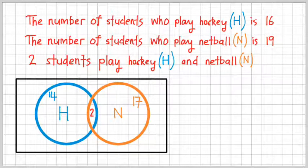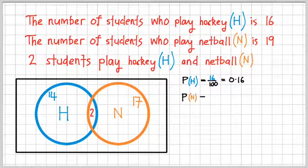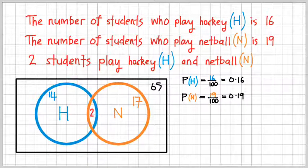So here we go. There's our diagram again. And let me speed this up a little bit. There we go. This is what we had before. And I'm just going to label that 65 as well. Now, these probabilities will stay the same because the event of H or students playing hockey, there is still going to be 16 regardless of the fact that the two students in the middle play netball as well. Same situation for netball.